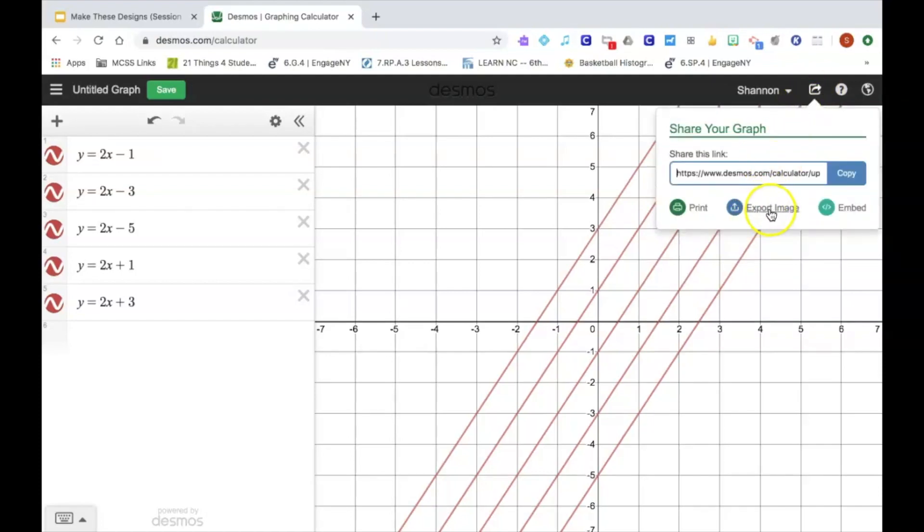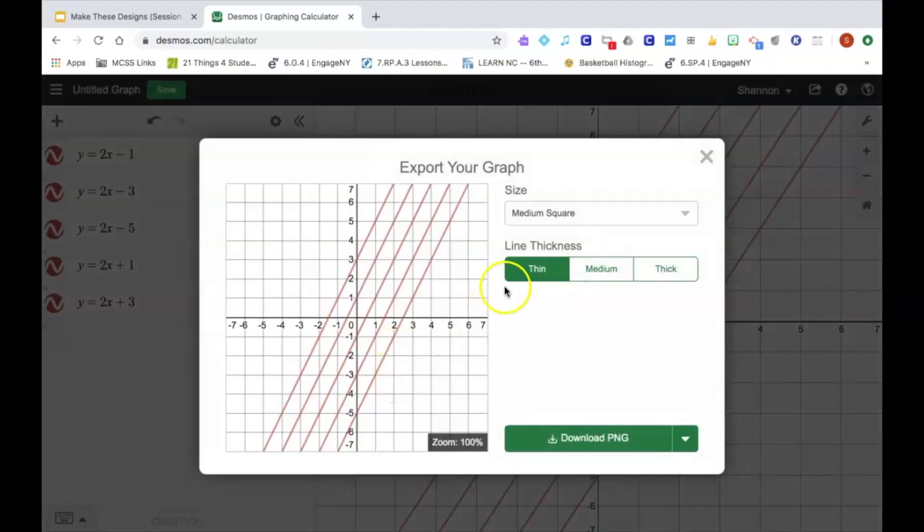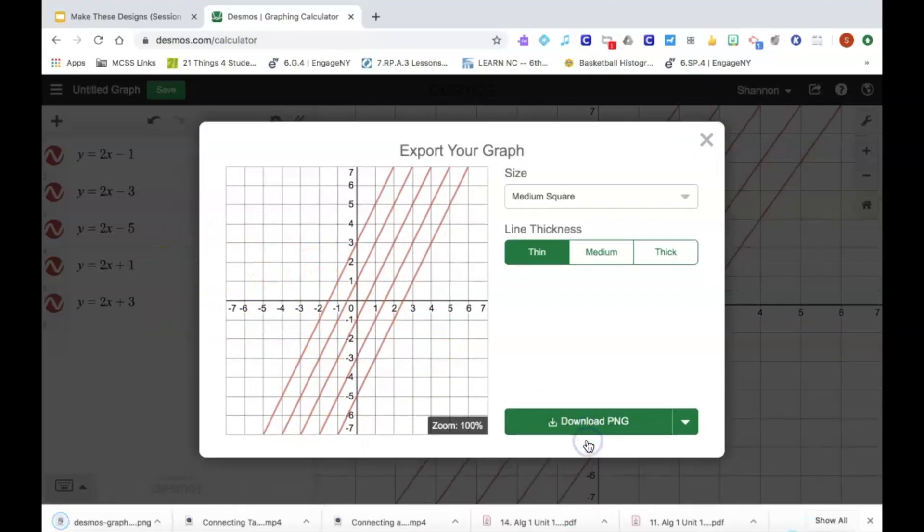I'm going to click share graph and I'm going to click where it says export image. This medium square is the right size that you will need so that it will have the correct viewing window. And then I'm just going to download my image.